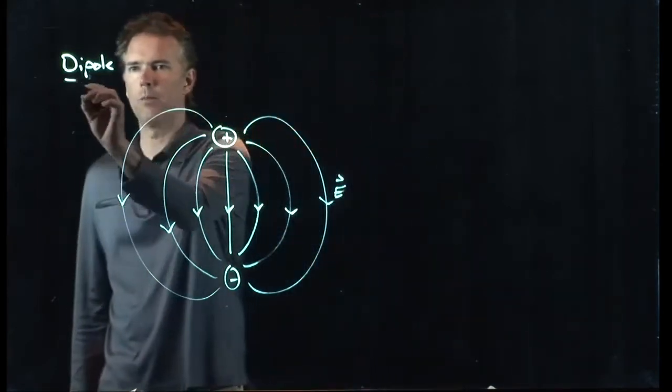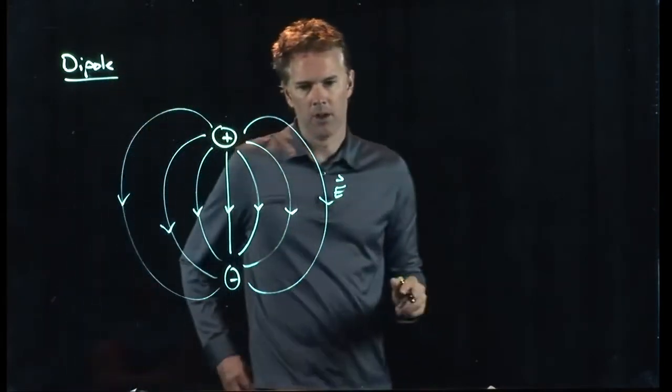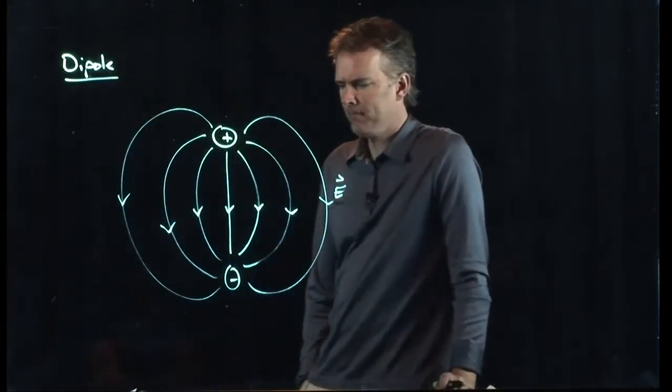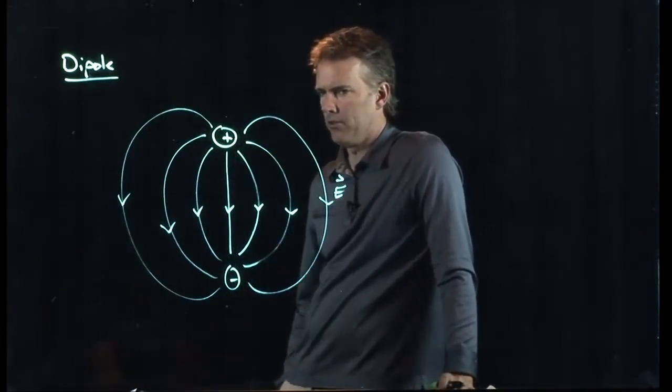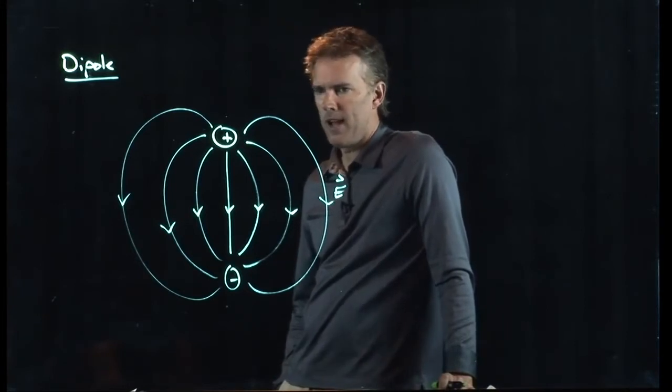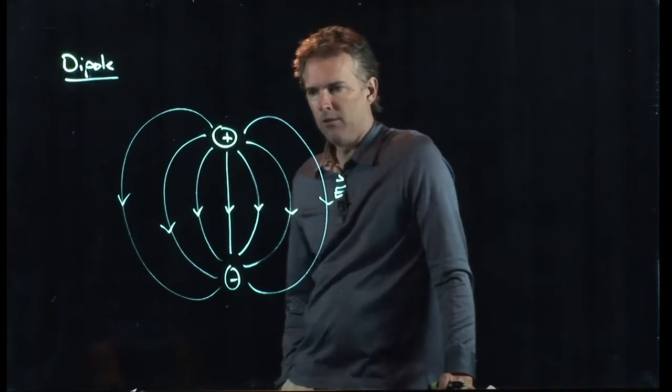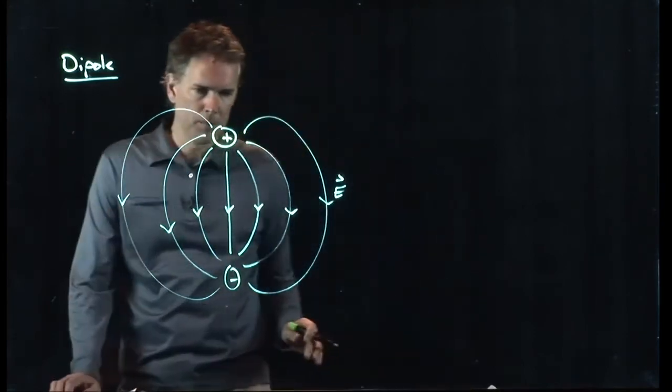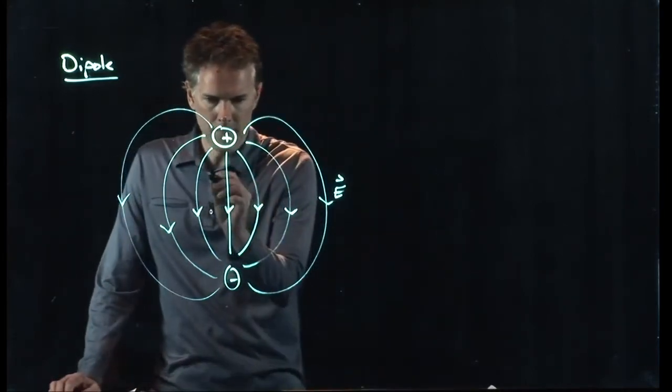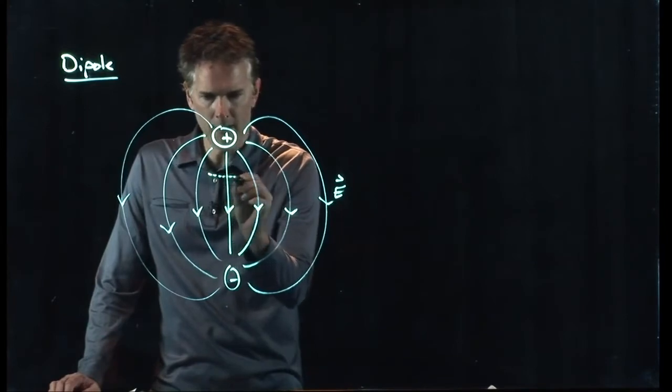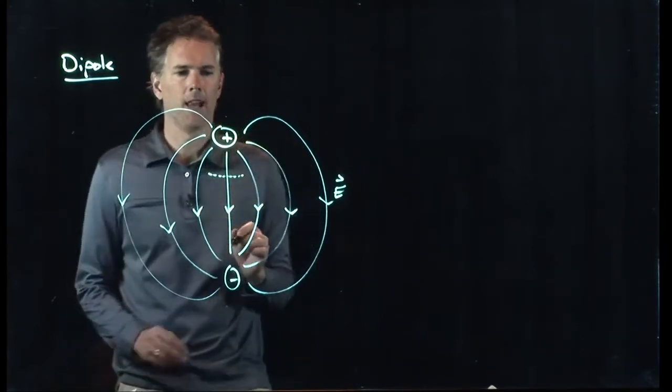What about equipotential surfaces? Well, we said that the equipotential surfaces always have to be perpendicular to E. So if there is some equipotential surface right here, it has to start out perpendicular to that line.